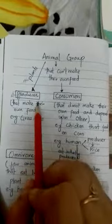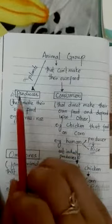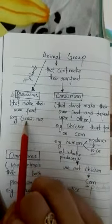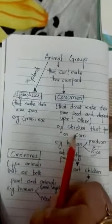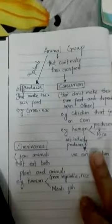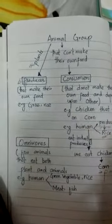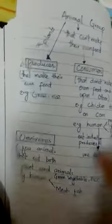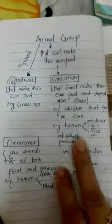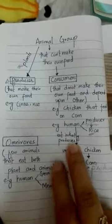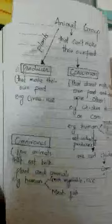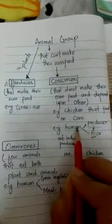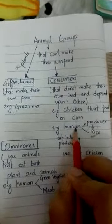So what is the difference between producers and consumers? Producers make their own food — examples are grass and rice. Consumers do not make their own food and depend upon others — examples are chicken and human. We have two types of consumers: consumers that directly feed on producers, and consumers that feed indirectly.